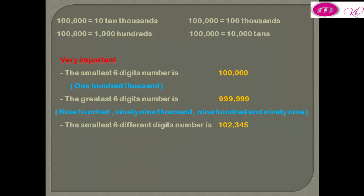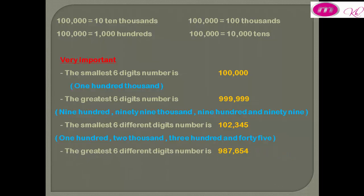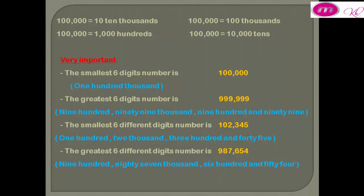The smallest six-digit number using all different digits is 102,345. The greatest six-digit number using all different digits is 987,654.